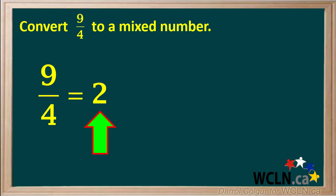4 goes into 9 two times. Because 4 times 2 equals 8 and not 9, we know we're going to have a remainder. The remainder will be a fraction with the same denominator as the original fraction, which is 4.